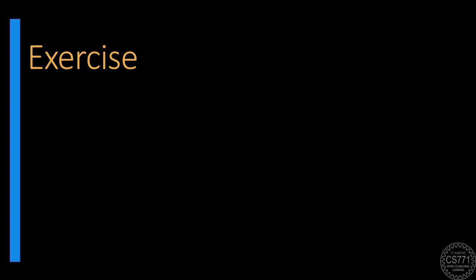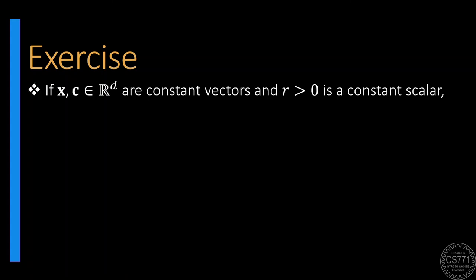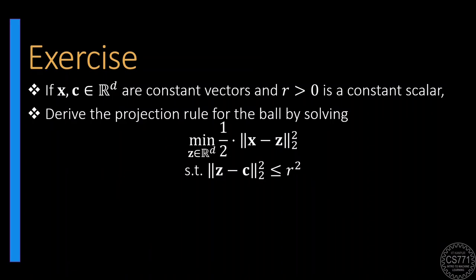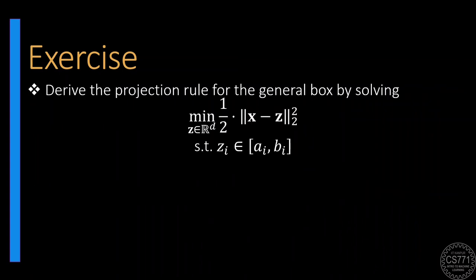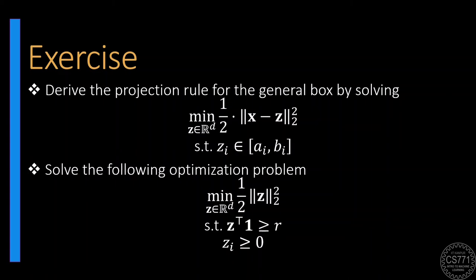To become an expert at creating and solving duals, attempt these exercise problems. The first asks you to derive the projection rule for a general ball. The second asks you to do the same for the positive orthant. The third asks you to derive the projection rule for a general box. The fourth is a simpler version of the second example we just saw. For each of these four problems, try solving in the primal using first-order optimality or the Quinn trick; if not possible, create the dual problem and try solving in the dual instead.